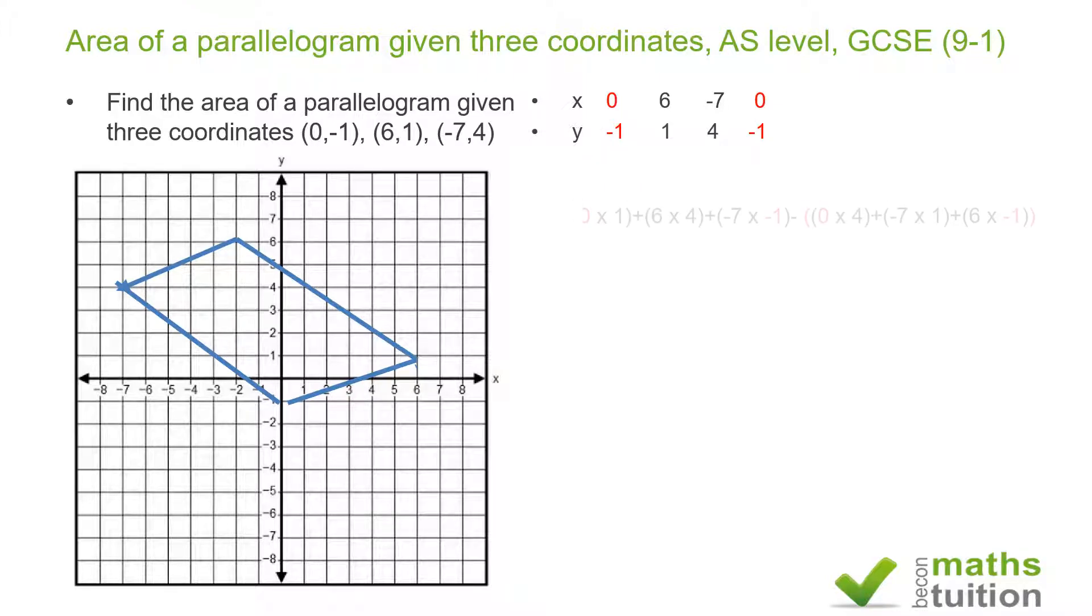Then what I do is this: I multiply zero times 1 that way, plus 6 times 4 that way, plus -7 times -1. And then going back the other way, I do 0 times 4, -7 times 1, and 6 times -1.